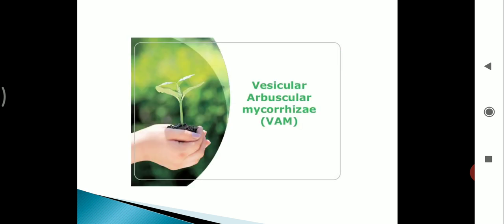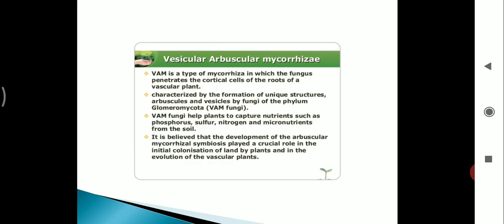Next we are going to vesicular arbuscular mycorrhiza. VAM is a type of mycorrhiza in which the fungus penetrates the cortical cells of the root of a vascular plant. It is characterized by the formation of unique structures. It contains two important structures: arbuscular and vesicle. This is phylum Glomeromycota. VAM has three distinct regions.